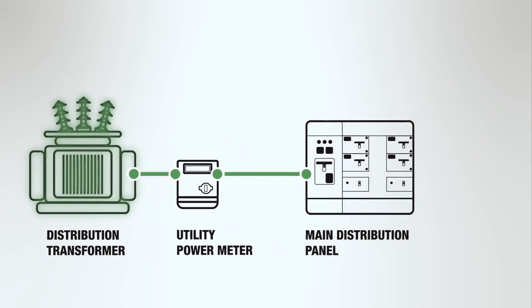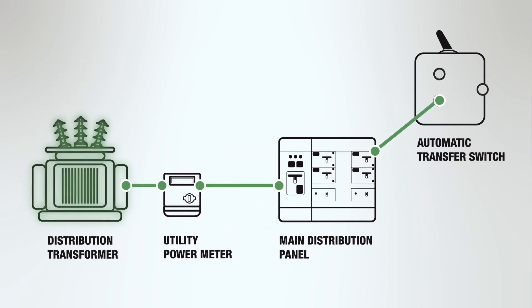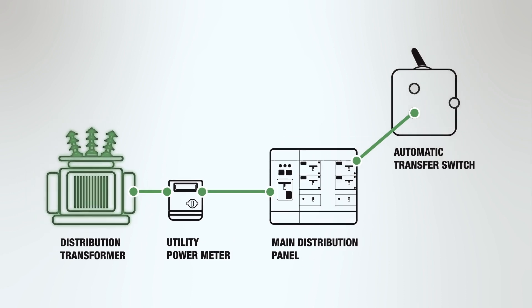The main distribution panel connects to an automatic transfer switch, or ATS, which looks for utility feed disruptions and power quality that is outside of specified limits.